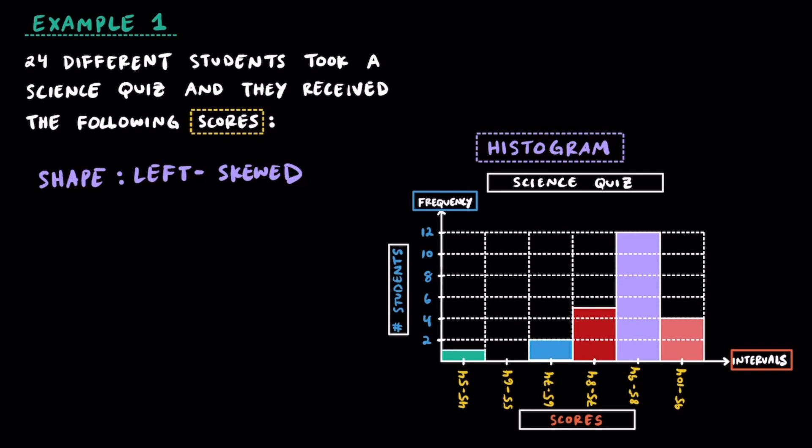While the lowest frequency, or the least amount of students, got between a 55 and 64, since no students did, the highest frequency was between 85 and 94, because there were 12 students that got scores in that interval.